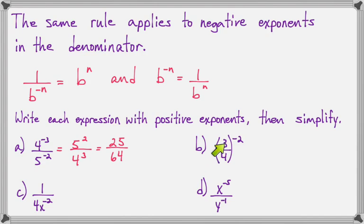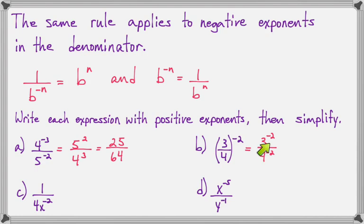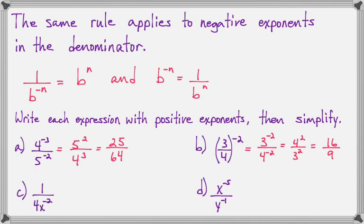On part B, 3 fourths to the negative 2nd — I'll have to assign the negative 2nd to both the 3 and the 4. Now I can see that both need to be moved, so I'll move 4 to the negative 2nd into the top, and 3 to the negative 2nd will move to the bottom. Now that gives us 16 over 9.